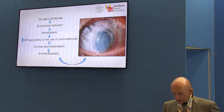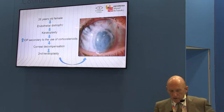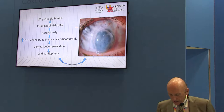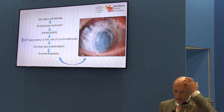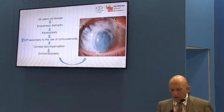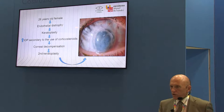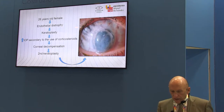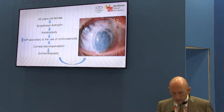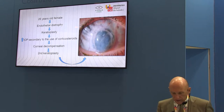This was the condition of the eye once the corneal decompensation happened before the keratoplasty. This case had a very fluctuating corneal stroma, a very fluctuating corneal thickness, and we could evaluate this by the MS-39.